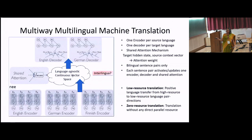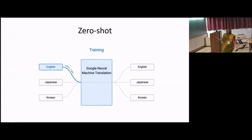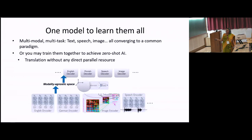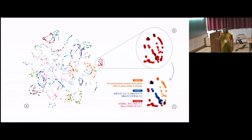A similar method by the other group uses multiple encoders, decoders, and a language-agnostic continuous vector space where sentences are represented. These multilingual machine translation systems give rise to zero-shot learning — for example, having training pairs from Korean to English and English to Japanese but not Korean to Japanese, and demonstrating the system can learn to translate between Korean and Japanese. You can also incorporate other tasks like image-to-text, training all of them so inputs can be represented by a common vector in a modality-agnostic, language-agnostic space — somewhat like the interlingua that people have dreamed of.